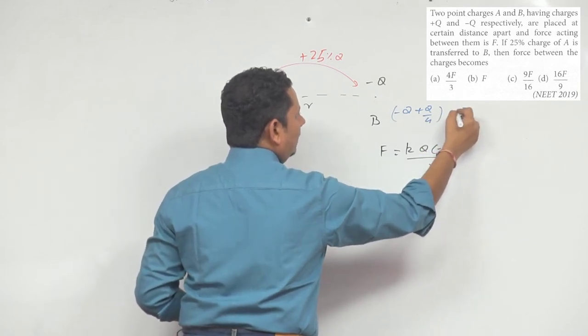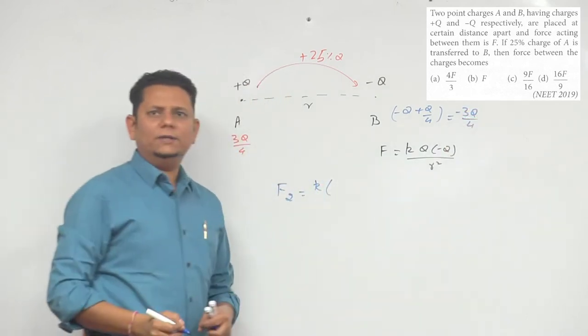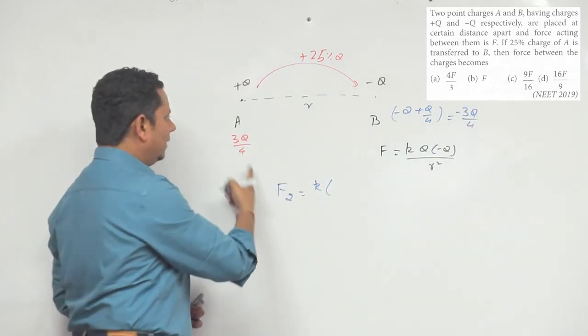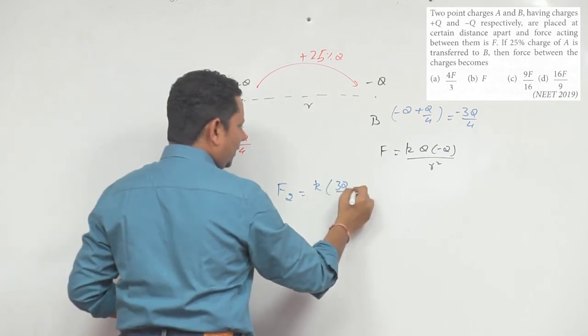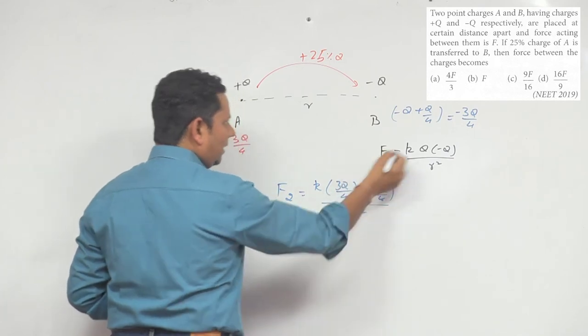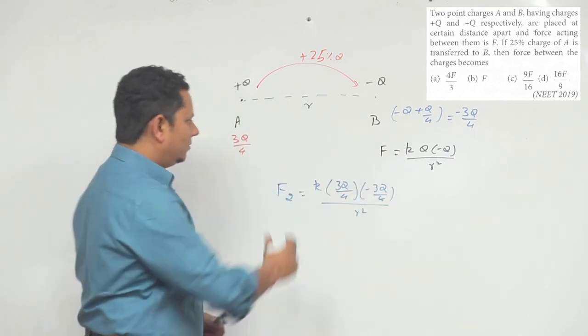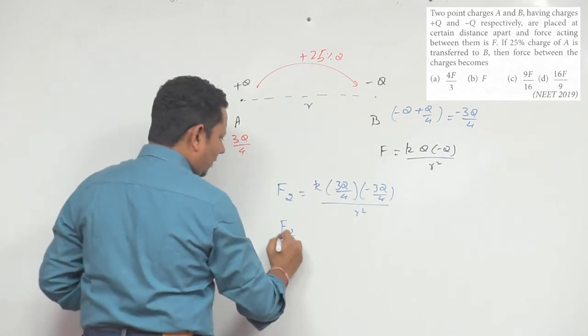Now in this case, our force will be (3Q/4) multiplied by (-3Q/4) divided by r². If we divide both, r² cancels, Q² cancels. So F₂ divided by F₁ will be equal to 9/16.